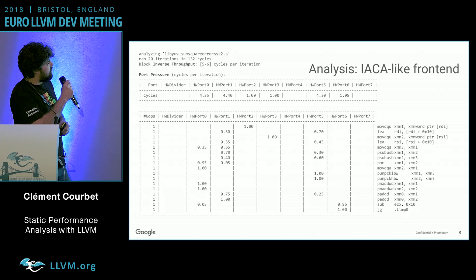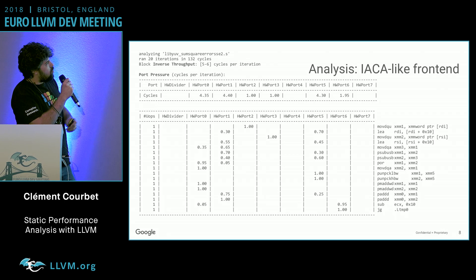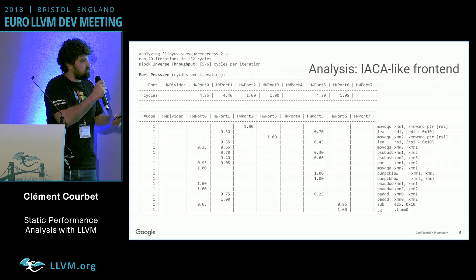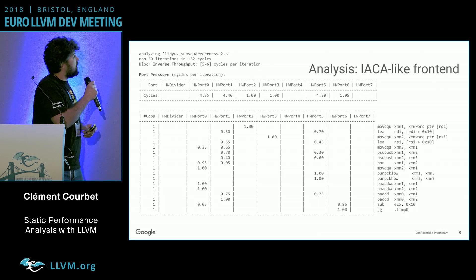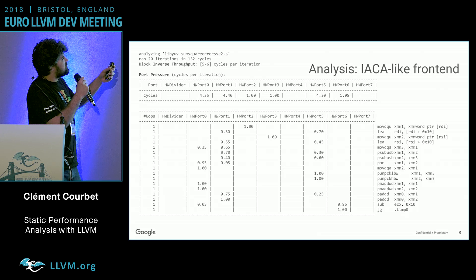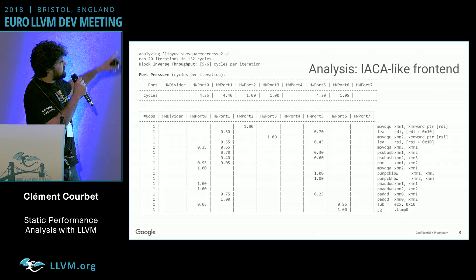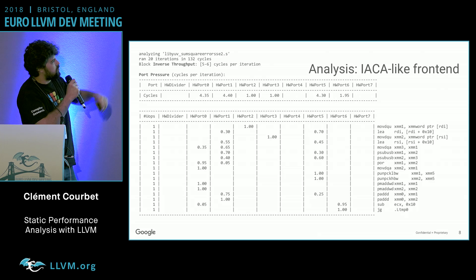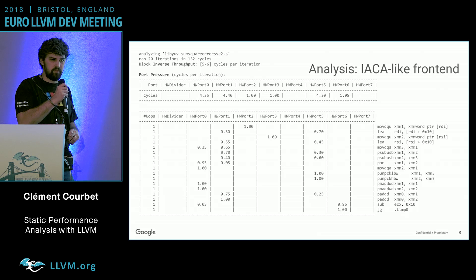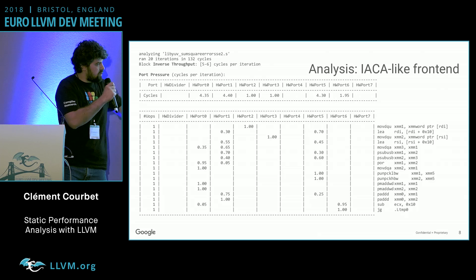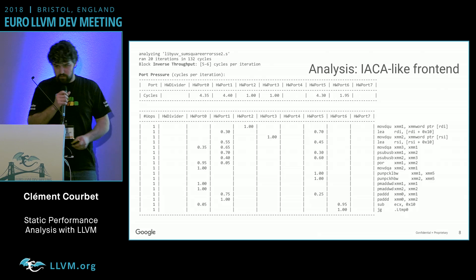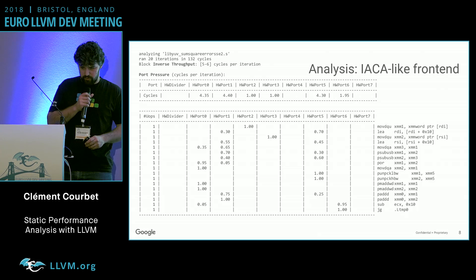So that's a screenshot of what one of the analyses looks like. It's essentially like a IACA-like front-end, for those of you who know it. It computes the inverse throughput of the block, gives you the port pressure for how the CPU executes the kernel, and gives you instruction-level annotation of the used ports.